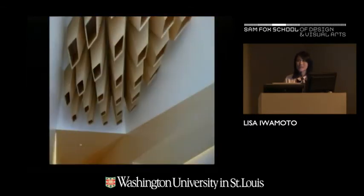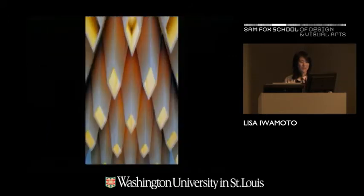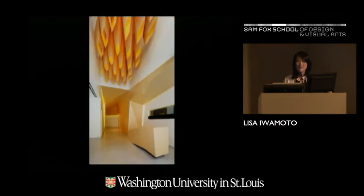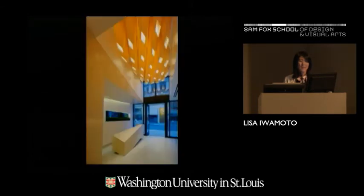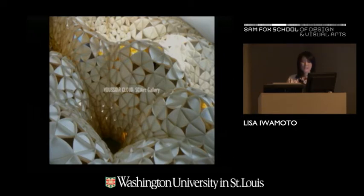We also looked at the material in relationship to light and detail — how to make a rigid edge while capitalizing on the luminosity of the wood veneer. This is a lobby we did in San Francisco, testing the translation of this material from the ceiling to the wall, behaving in two very different ways. How can something solid also be something quite light and take on a different kind of reading in space? All these ideas about luminosity, folding, and structure came together in the project we did for the SCI-Arc gallery: Voussoir Cloud.